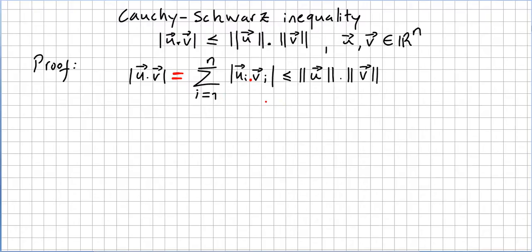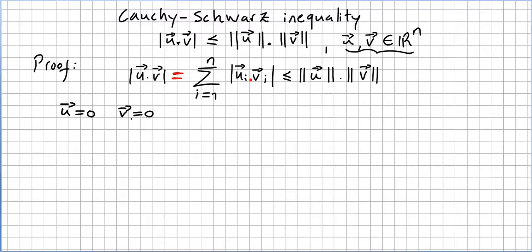The stronger statement is: the sum from i=1 to n of uᵢvᵢ is less than or equal to the norm of u times the norm of v, where u and v are vectors in ℝⁿ. If either u equals zero or v equals zero, then both sides equal zero, and zero is less than or equal to zero. So the inequality is proved in that case.